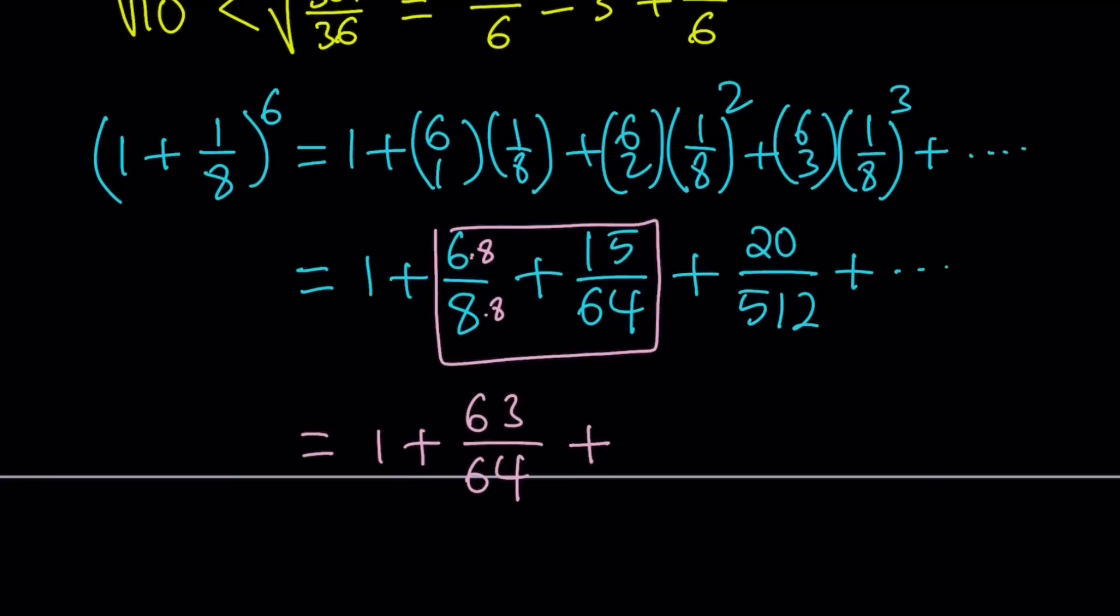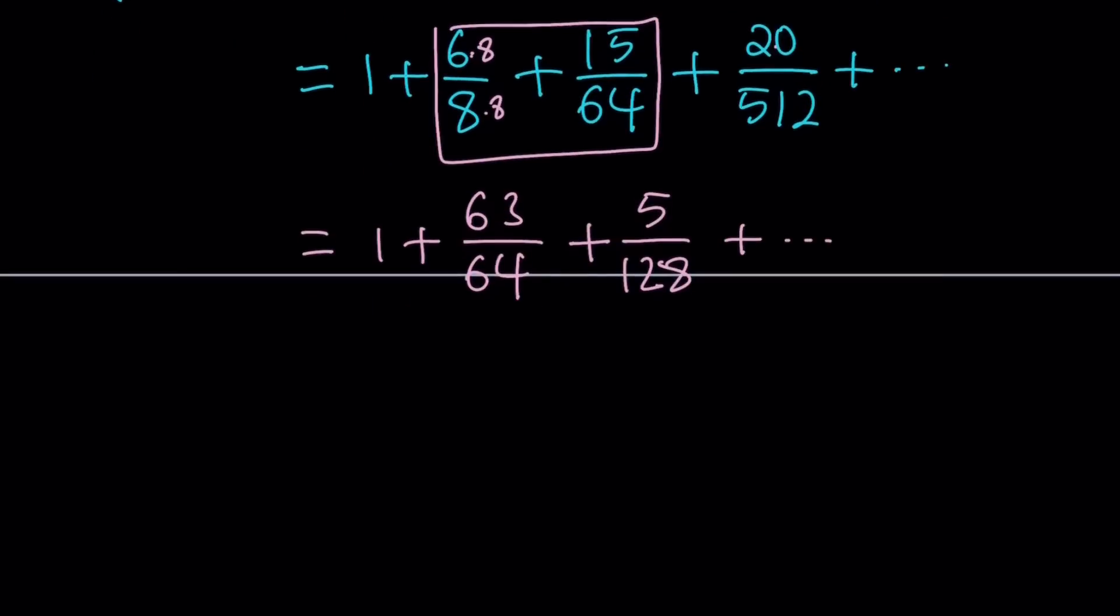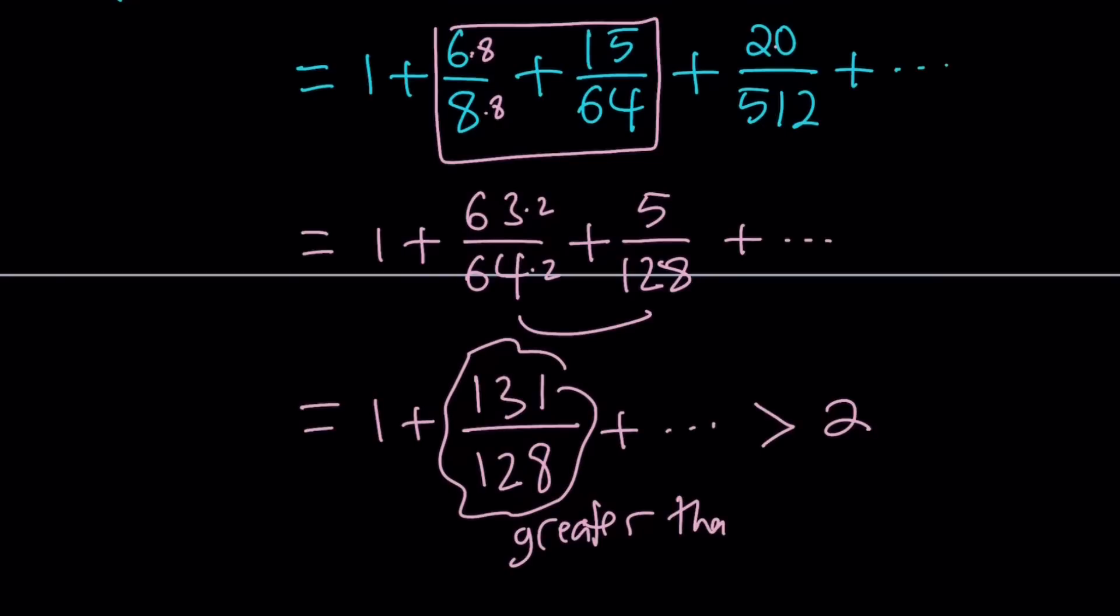So I need to add another term. If I simplify 20 over 512, I can go ahead and divide both of them by 4, which is the greatest common factor. I'm going to get 5 over 128. Again, the rest I'm not going to need. Now let's go ahead and combine these two numbers. That's going to give me the following. Multiply this by 2 and that by 2. 126 plus 5 is 131 over 128. And yay, this is greater than 1, which means the sum of this number and 1 is greater than 2.